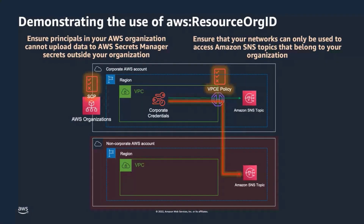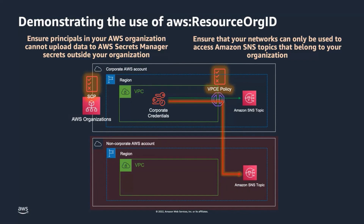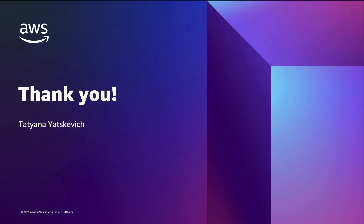To summarize, using AWS Resource Org ID condition key within a VPC endpoint policy, you can create a resource data perimeter around your corporate data, helping to ensure that your networks can only be used to access resources in your organization. Please note that there are scenarios when AWS services act on your behalf accessing resources that do not belong to your AWS organization. Such data access patterns should be accounted for when implementing the Resource Org ID condition key in policies in your production environment. This should be dictated by your use of AWS services and expected data access patterns. Please reference individual service documentation for more details.